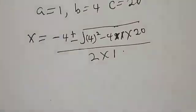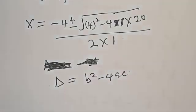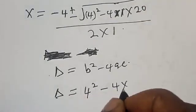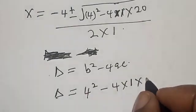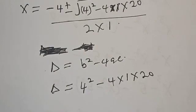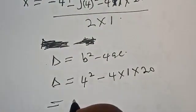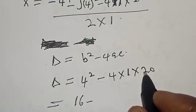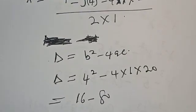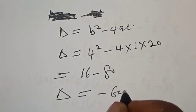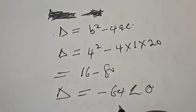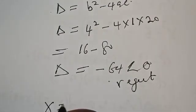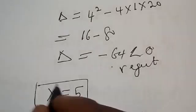Our discriminant is b squared minus 4ac. That is 4 squared minus 4 times 1 times 20, which equals 16 minus 80, giving a discriminant of minus 64, which is less than 0. Therefore we reject this case. The only real solution we have is x equal to 5. That is our final answer.